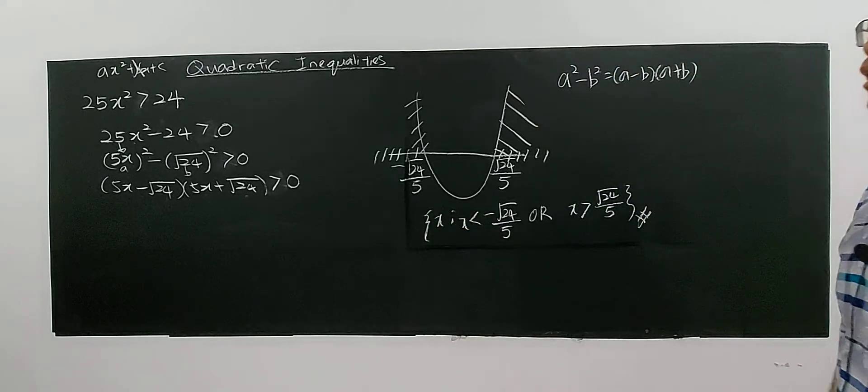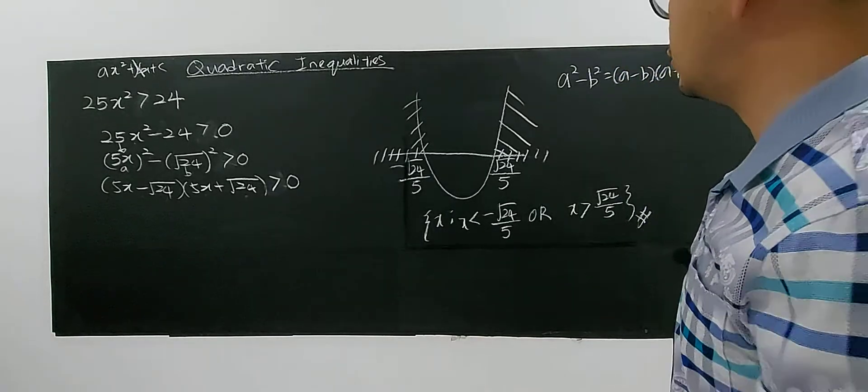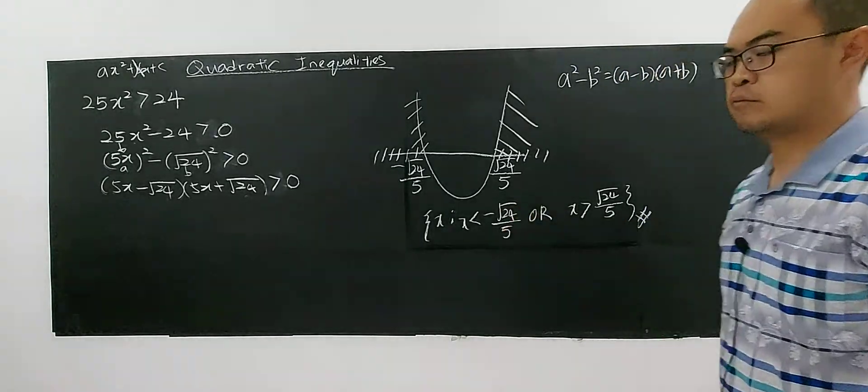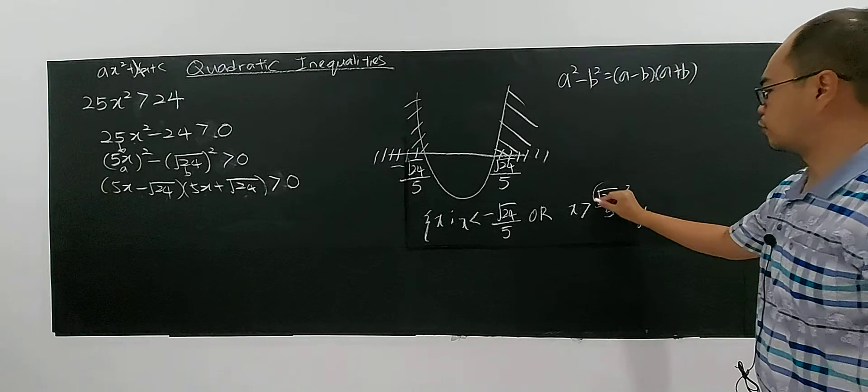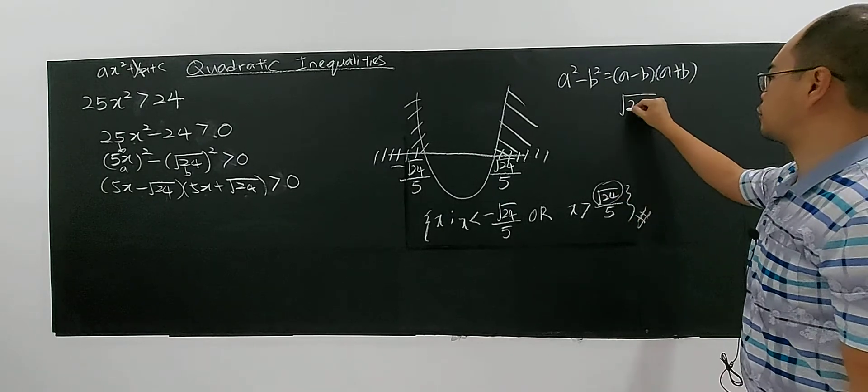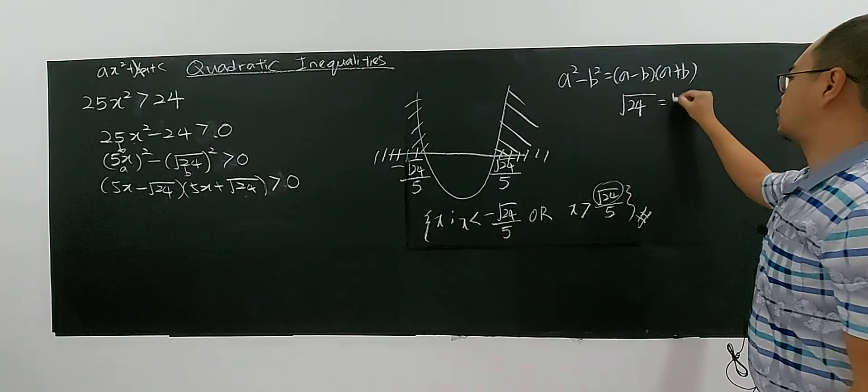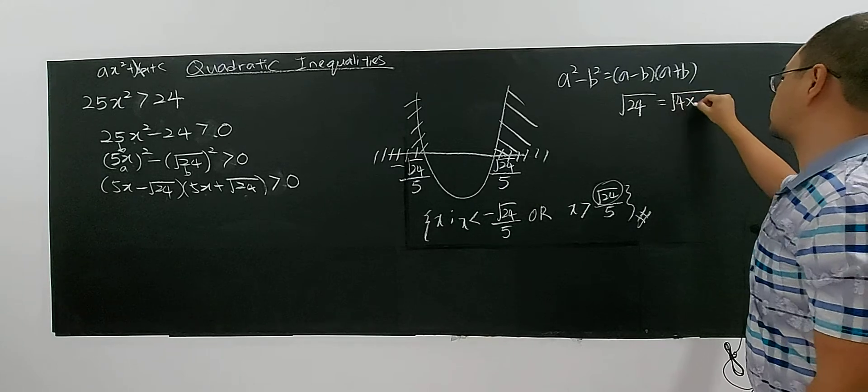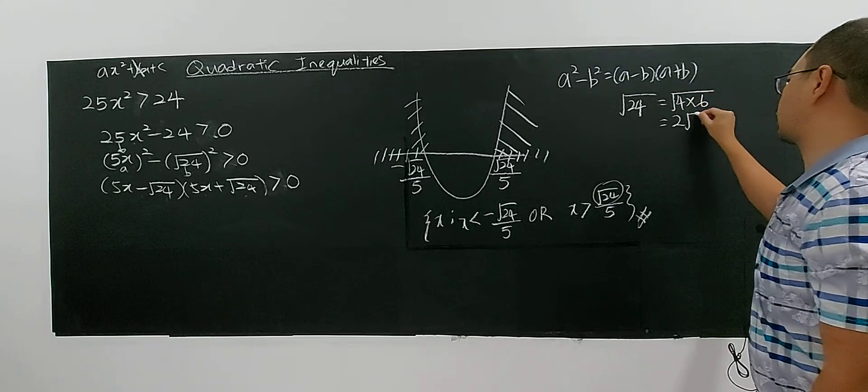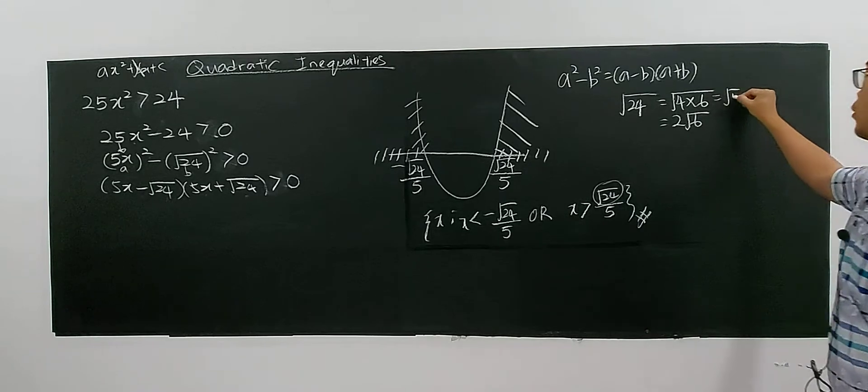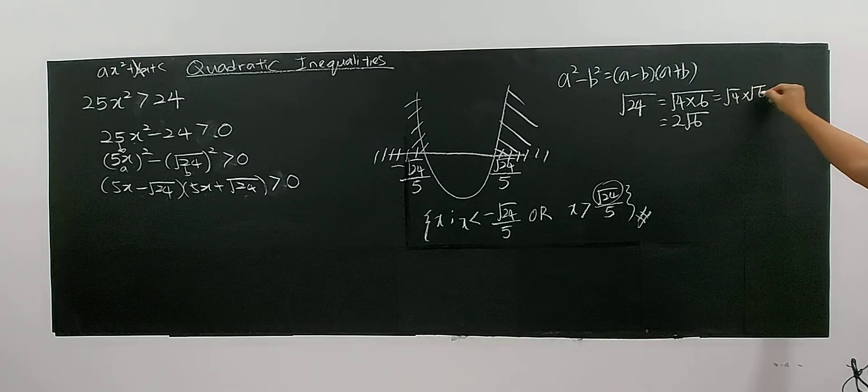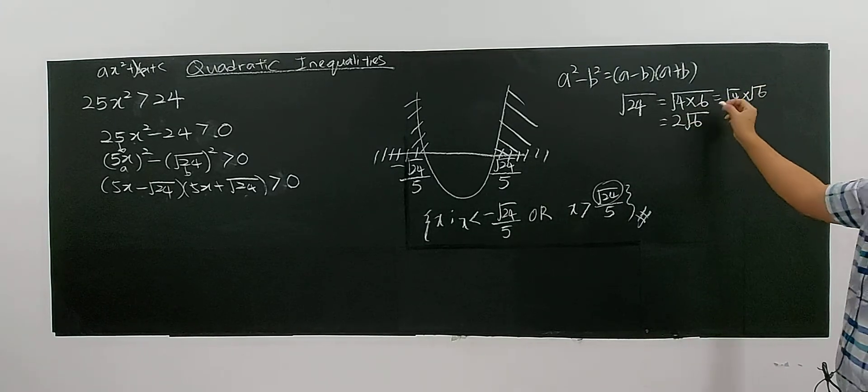So without using calculator to get decimal value, we leave in surd form. After you're learning the surd form, actually square root of 24 can be further reduced. You can reduce become 4 times 6. So you can write as 2 square root of 6.